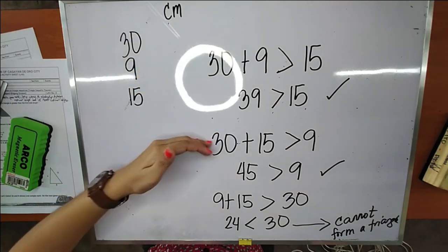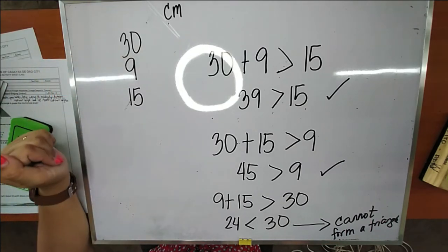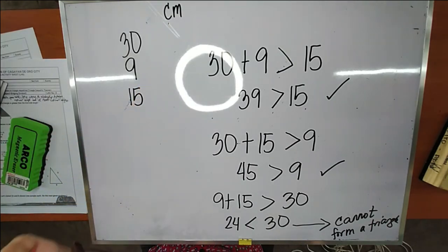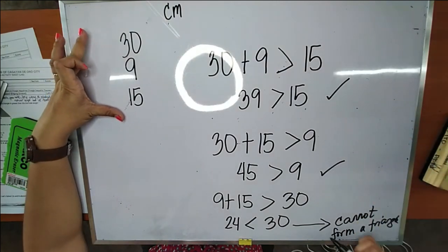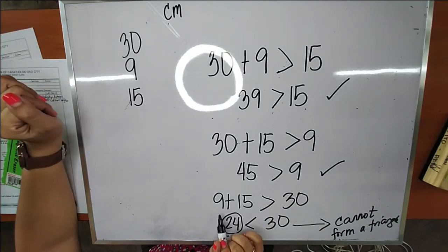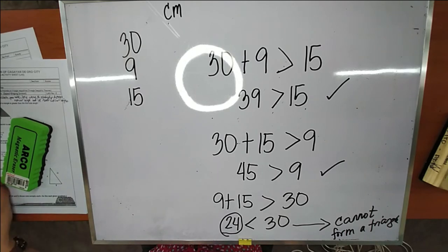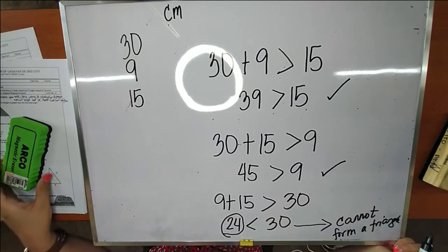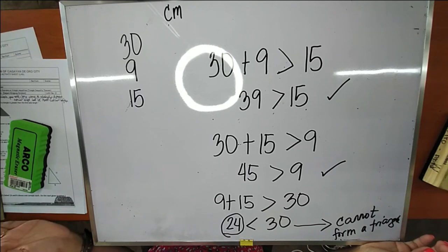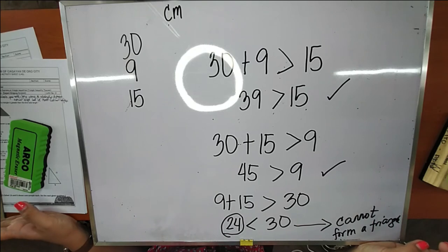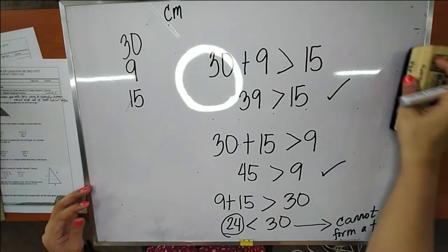We must go through all three trials to know whether we can form a triangle with the given measurements. All three results must be true — both lengths must be greater than the third length. In this case, only two trials were true; the third was false, so we cannot form a triangle. But I will teach you a shortcut method so you only need to add once. We will cover that shortly after some examples.